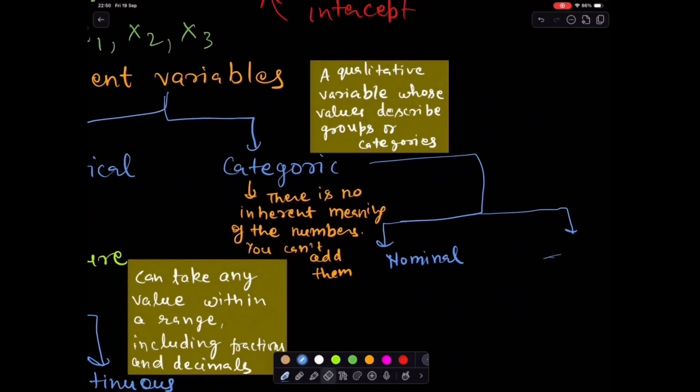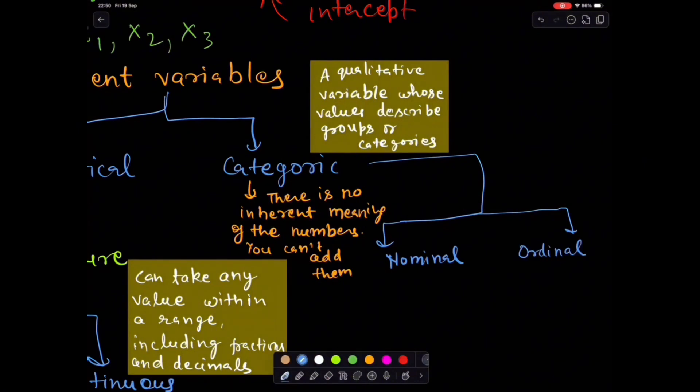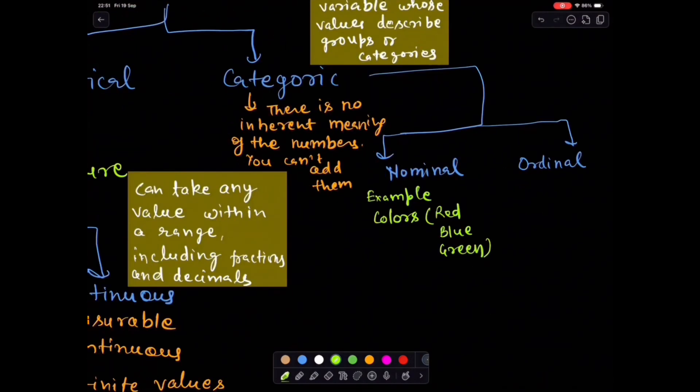Categorical variables come in two types. Nominal, categories without order. Example: colors, red, blue, green. You cannot say red is number one or blue is number three. There is no ranking here.